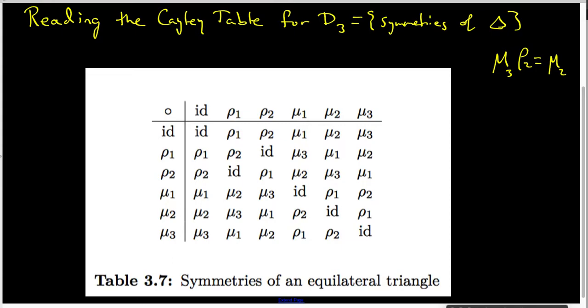Now, what I'm going to do is I'm going to look at two different entries in this table. Here is the mu three row, here is the row two row, here is the row two column, and here is the mu three column.